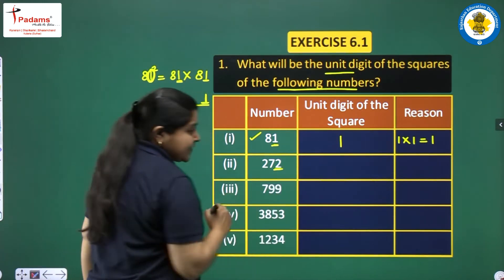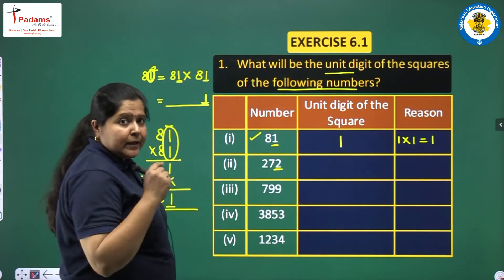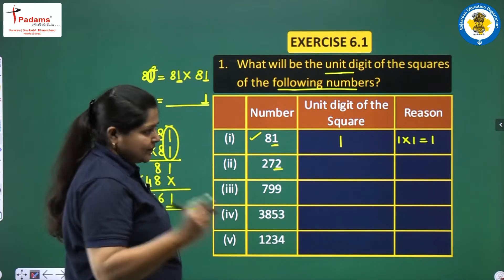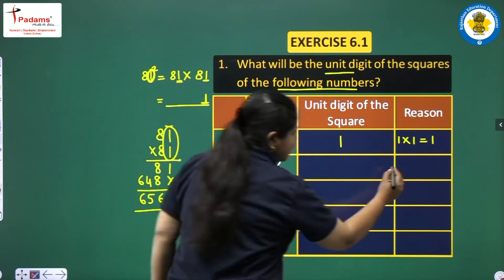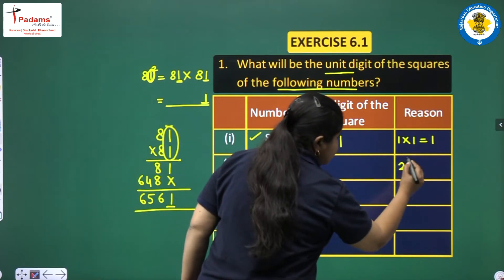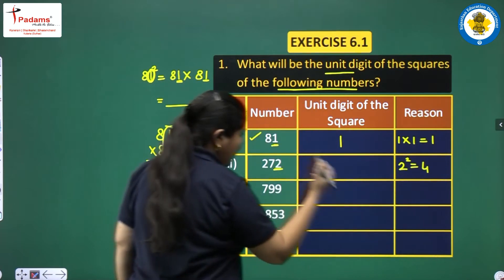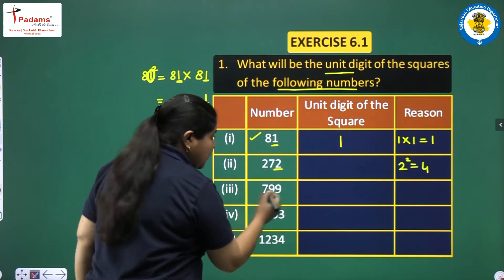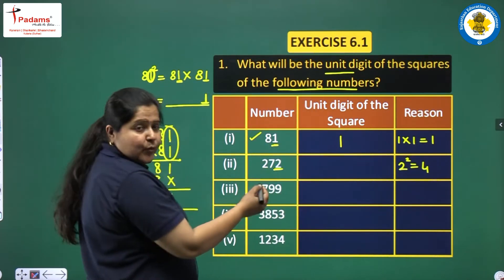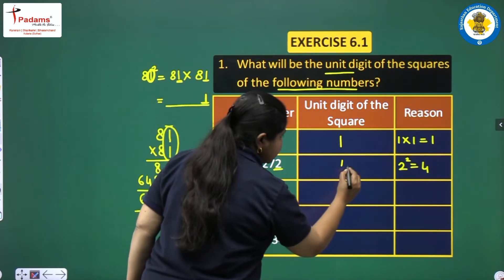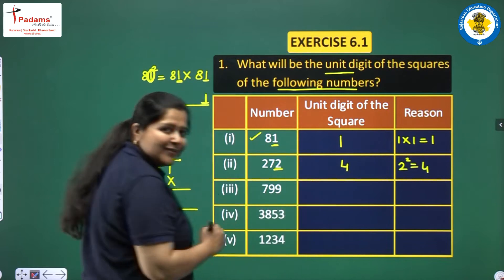The next number ends in 2, and 2 squared is 4. So the whole number's square will end in 4.